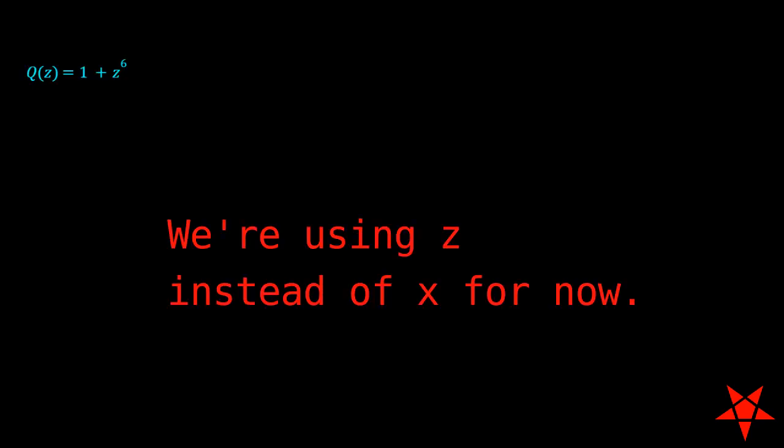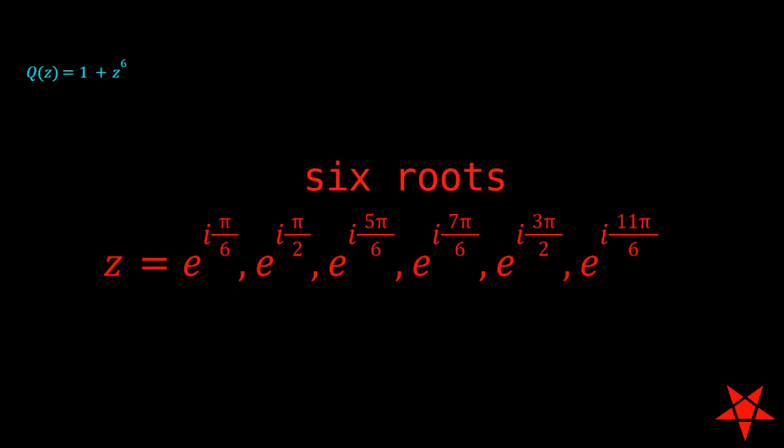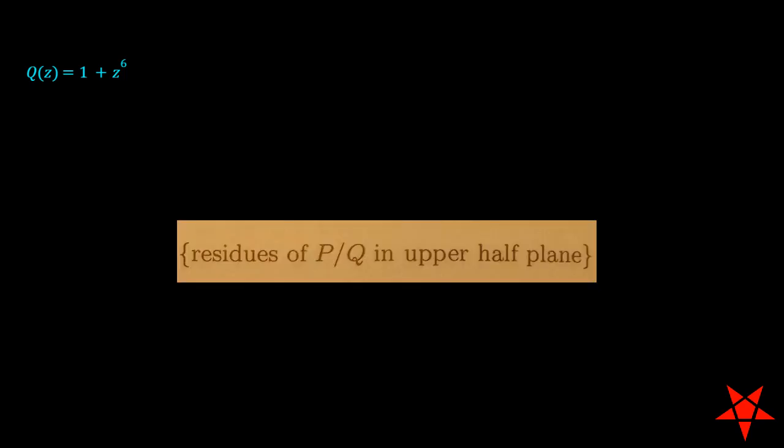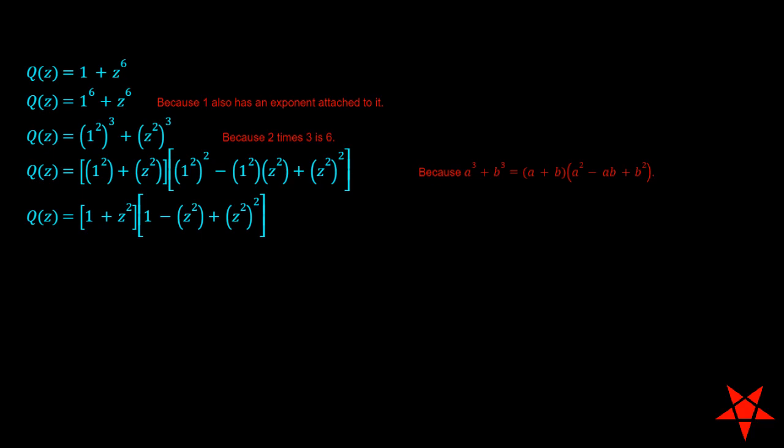Since I know you all wanted me to factor 1 plus x to the 6th, it's actually z algebraically. Let me do it now so that we can be fully aware of the order of each of the six roots of q of z, formerly q of x. Also, we really need to do this in order to properly select the methodology for calculating residues of p of z over q of z later on. So, 1 plus z to the 6th equals 1 to the 6th plus z to the 6th. Then we break the respective exponents into cubic expressions and from here it helps if you know the sum of the cubes formula.